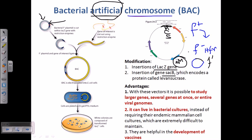The product of the lacZ gene is beta-galactosidase. We incorporate lacZ within the multiple cloning site region. When a restriction enzyme — for example, EcoRI — is used to cut this region, it cuts open the MCS and breaks the region responsible for beta-galactosidase production, disrupting the lacZ gene.